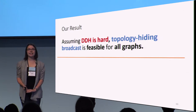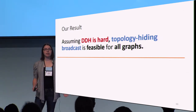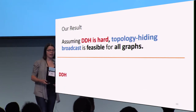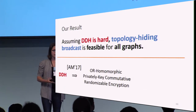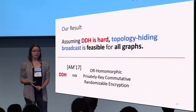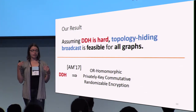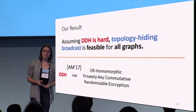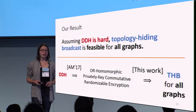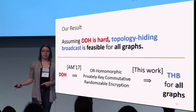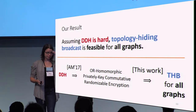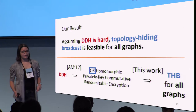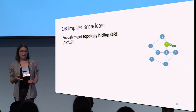Assuming that decisional Diffie-Hellman is hard, topology hiding broadcast is feasible for all graphs. Explicitly, our contribution: the Akevia-Moran protocol showed that given DDH, we can get this thing called OR-homomorphic privately-keyed commutative randomizable encryption. And then we show that this gets us topology hiding broadcast for all graphs. Now let's focus in on this OR-homomorphic part.